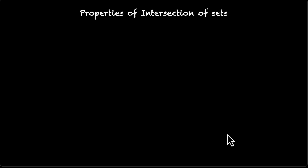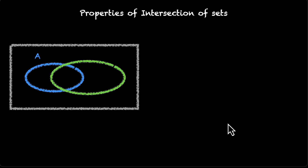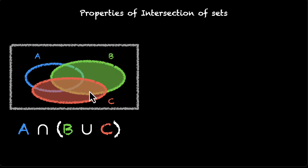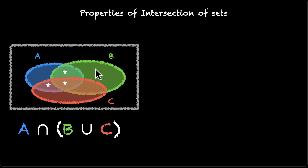Now let's finish with one last property — my favorite because it takes care of both intersection and union. We have A, B, and C, and we're going to find A intersection (B union C). Let's first find B union C, which is everything inside the green region or the orange region. Now we take the intersection of this with A, looking at what's common between the shaded region and the blue region — we get these three shared portions.